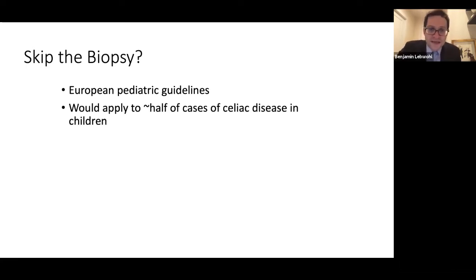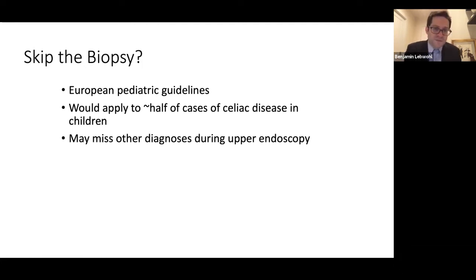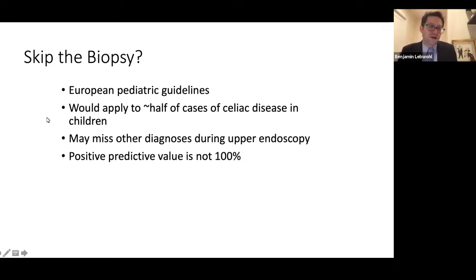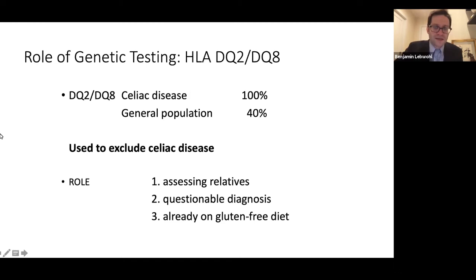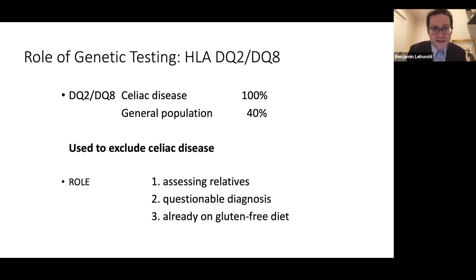That would apply to about half of all cases of celiac disease among children in Europe. We're concerned, though, that if we skip the biopsy we might miss other diagnoses that would be picked up during endoscopy looking at the stomach and esophagus. Also, the positive predictive value is not 100% — if you have a very highly elevated antibody test, it's not 100% certain you have celiac disease. And because the gluten-free diet is a lifelong or long-term treatment, we want to be close to 100%. That's why we've been hesitant to adopt that guideline in the United States or for adults.